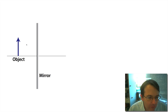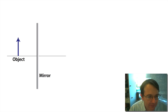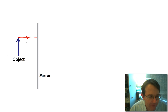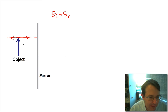We have an object standing in front of a mirror, and we're going to use ray tracing to show how this plane mirror will form an image. When ray tracing, we pick certain principal rays — rays whose paths are easy to determine. The first principal ray comes straight in horizontally from the top of the object. When it strikes the mirror, its angle of incidence is zero, so the angle of reflection is zero. The ray reflects straight back in the direction it came.